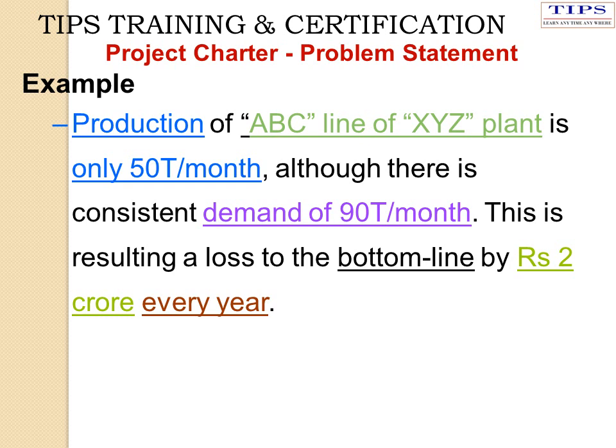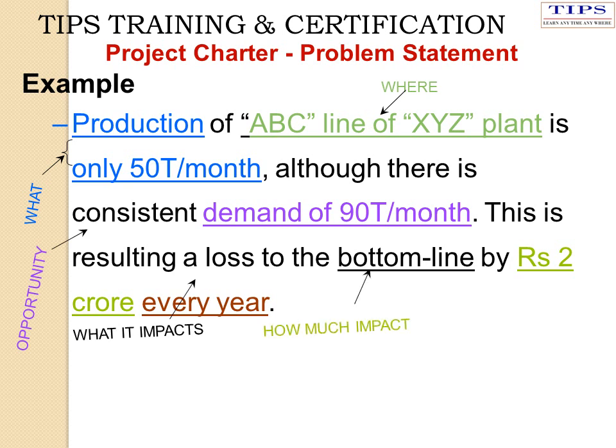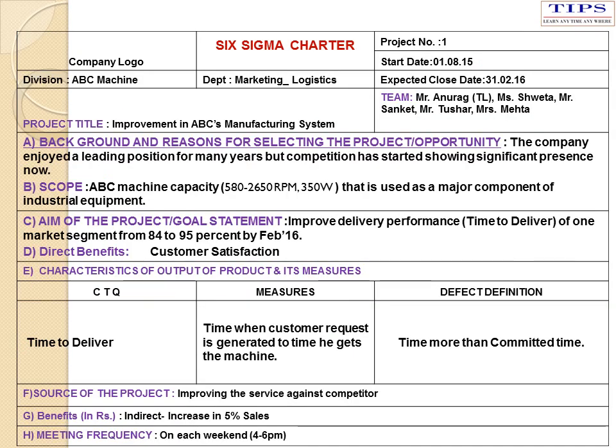This is an example of a problem statement in the project charter, where production of ABC line of XYZ plant is only 50 tons per month, although there is a consistent demand of 90 tons per month. This is resulting in loss to the bottom line by Rs. 2 crore every year. In this case, you can find that what, where, opportunities, what it impacts, how much impact there is, and when the impact has occurred are all being described.